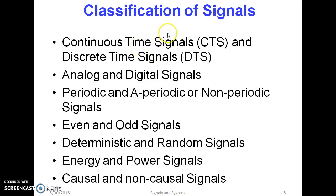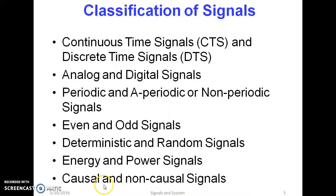The classification of signals is based on the property of a signal. There are various classifications such as continuous time signal, discrete time signals, analog, digital signals, periodic, aperiodic signals, even and odd signals, deterministic and random signals, energy and power signals, and causal and non-causal signals. We are going to see all of these classifications one by one for their definition and some examples.